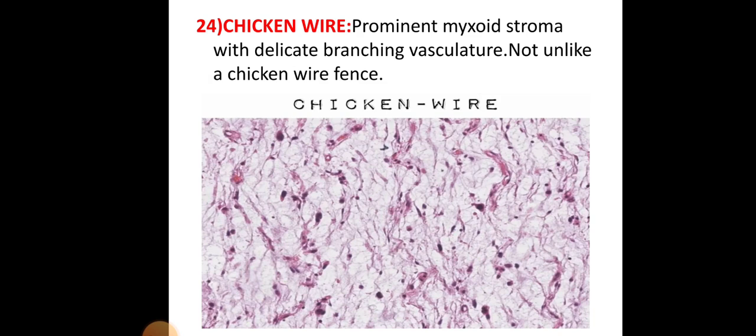The chicken wire pattern is where prominent myxoid stroma is seen with delicate branching vasculature, not unlike a chicken wire fence pattern.